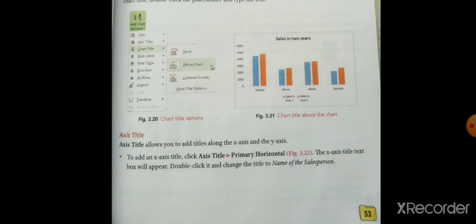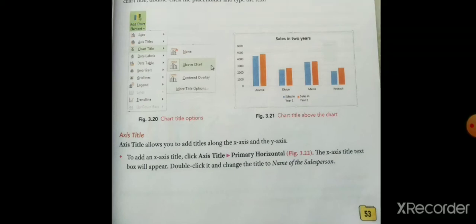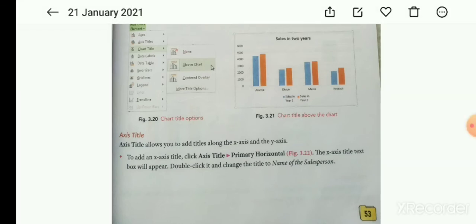Axis title allows you to add a title along the X axis and Y axis. To add an X axis title, click Axis Title > Primary Horizontal. The X axis title text box will appear; double click it and change the title to the required name. आप X axis का title change करना चाहते हैं तो Primary Horizontal पे click करेंगे और उसका नाम change कर सकते हैं।